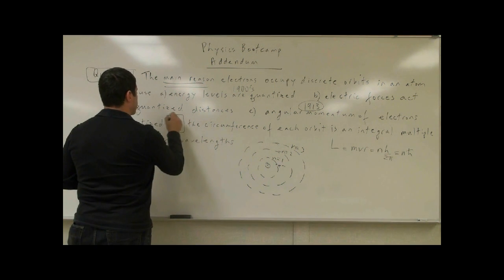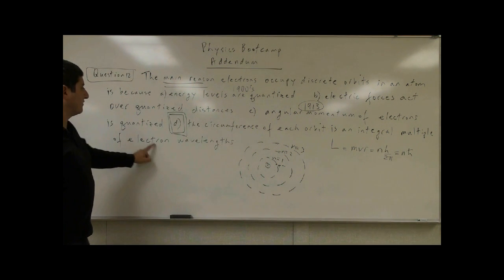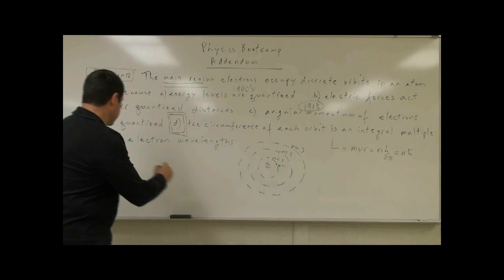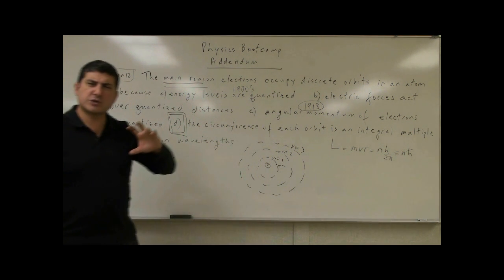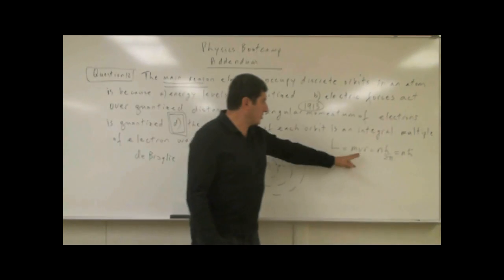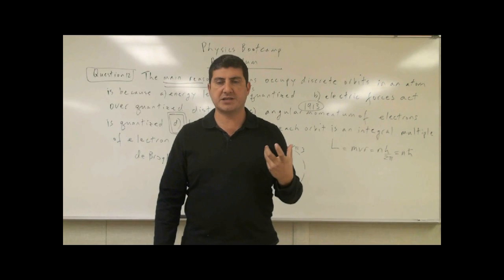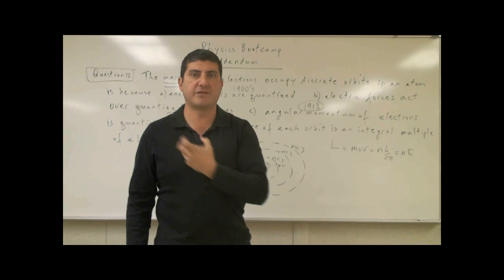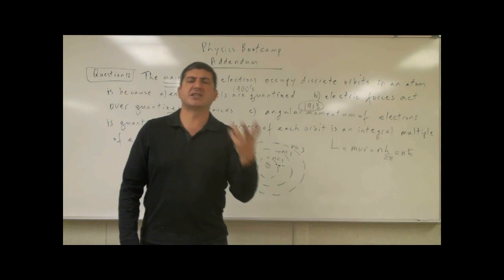D is the answer. The circumference of each orbit is an integral multiple of electron wavelengths. This was proposed by de Broglie in the 1920s as an alternate explanation of why angular momentum was quantized and why the electron had to occupy certain orbits. This goes more to the root reason why we have different orbits. He envisioned the electron as a wave — this goes to the particle-wave duality of matter.